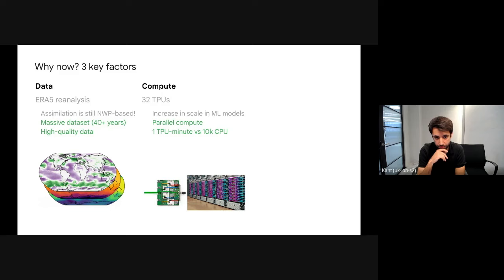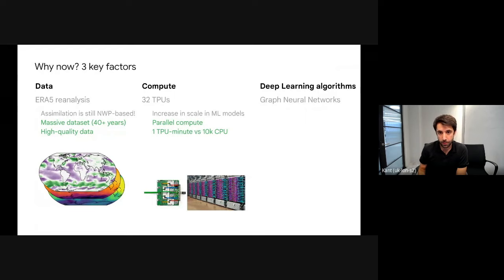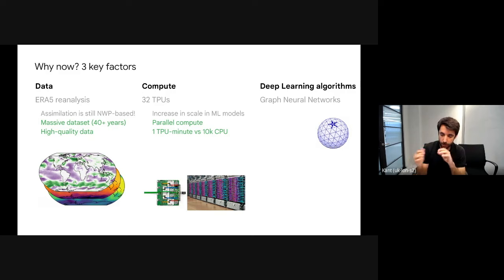This is because we leverage parallel compute. The third key factor is progress in deep learning algorithms. In particular, we build on graph neural networks. We build a mesh around the Earth and think about it as a graph, where the weather informs nearby weather states by passing messages along this graph.